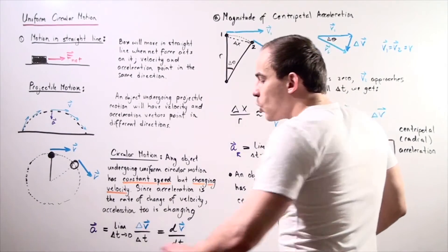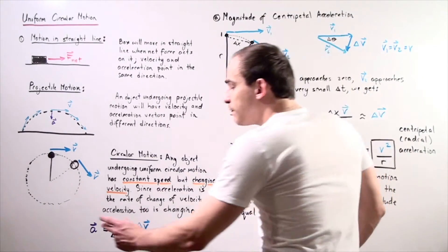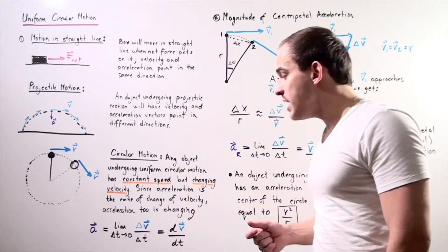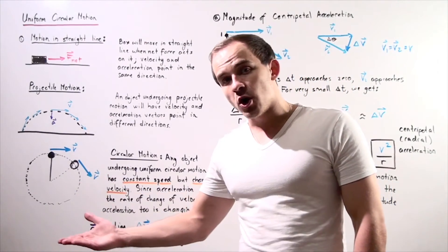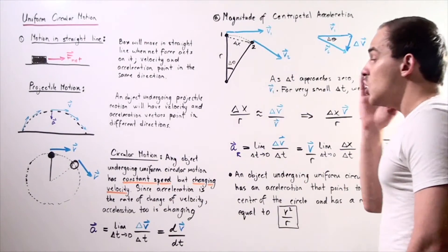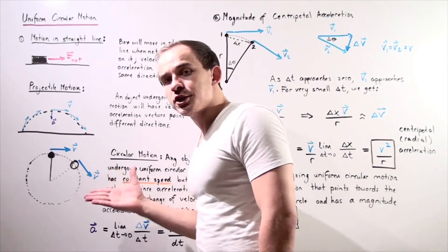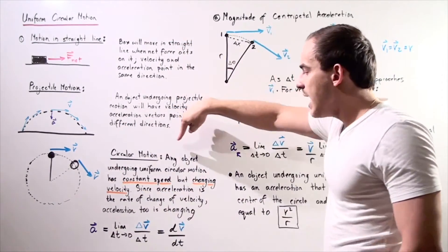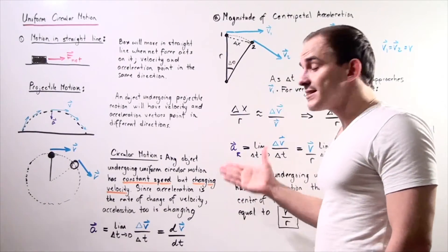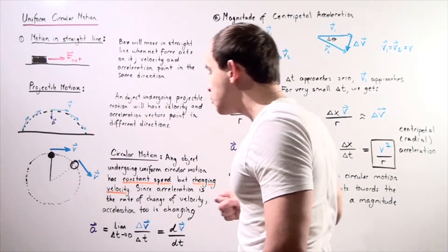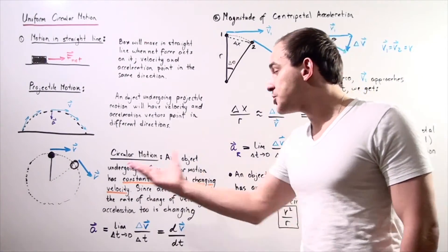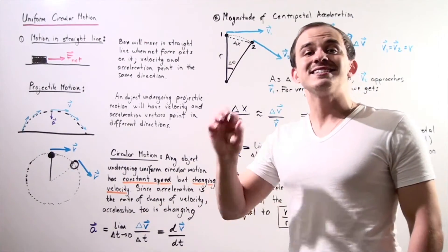Recall that the formula for acceleration is the limit of the ratio Δv/Δt as the change in time approaches zero — or simply the derivative of the velocity vector function with respect to time. So any object undergoing uniform circular motion has constant speed, but its velocity is changing because the direction of motion is changing. Since the velocity is changing, the object is in fact accelerating.